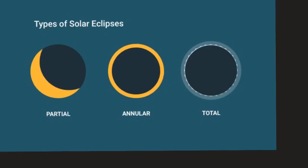There are mainly three types of solar eclipses: partial, annular and total. Let us take up one by one and look into the details.